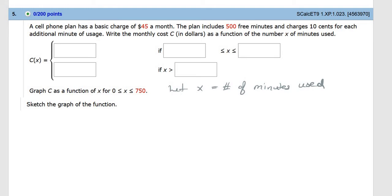They have the cost which is dependent on the number of minutes used, and they want you to write this down for any x. If x is less than 500, then it's easy—it's a constant flat fee of $45.